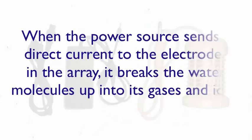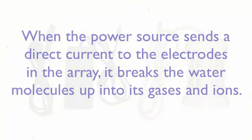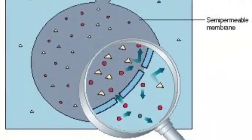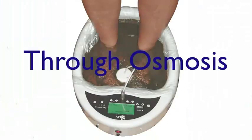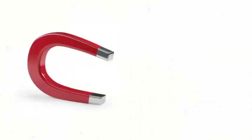When the power source sends a direct current to the electrodes in the array, it breaks the water molecules up into its gases and ions. These ions are now in the water creating a higher concentration. These ions are passed into the body through osmosis. There they attract toxins in the body like little magnets.